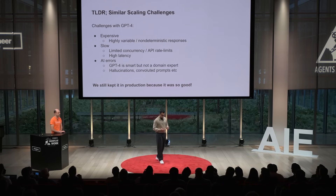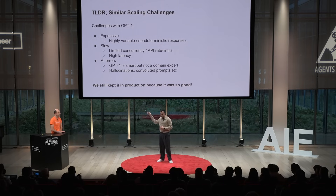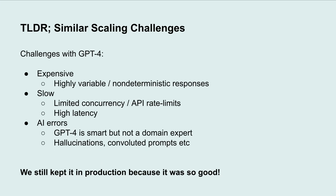The TLDR is that we didn't want to adopt that initial manual solution because of its scaling challenges and inefficiency. But we kind of ran into the same scaling challenges with GPT — it was expensive because we couldn't really optimize for caching due to variability in responses and the prompt tweaks we were making all the time. The baseline latency was actually really slow, so overall we couldn't scale concurrently.